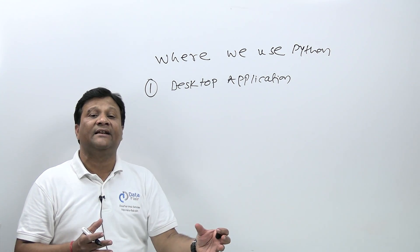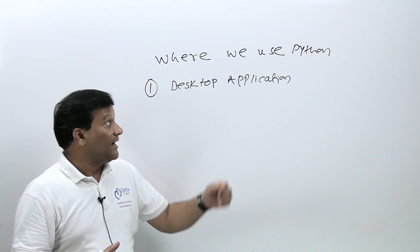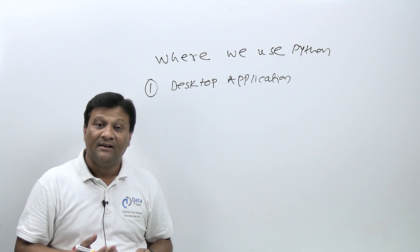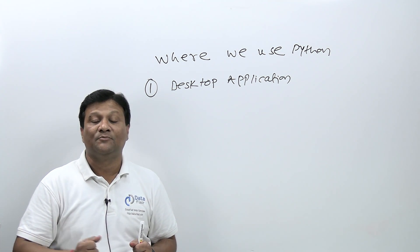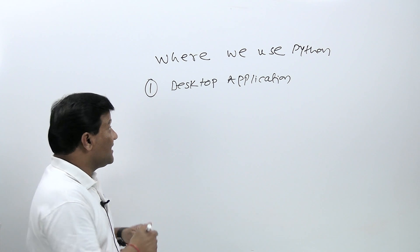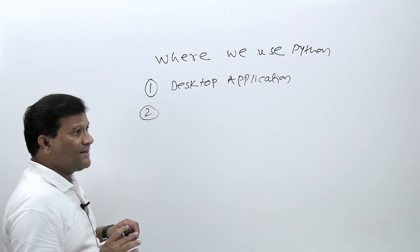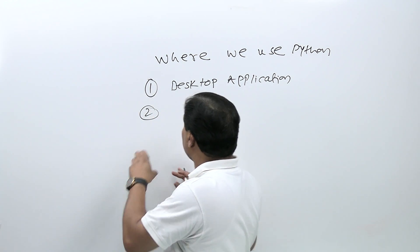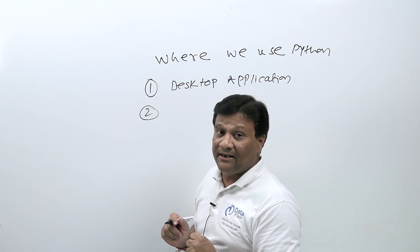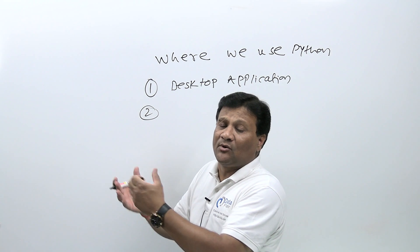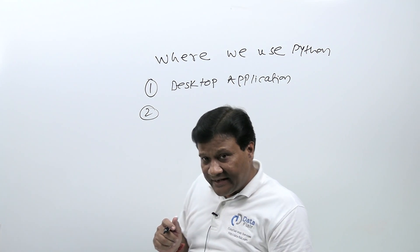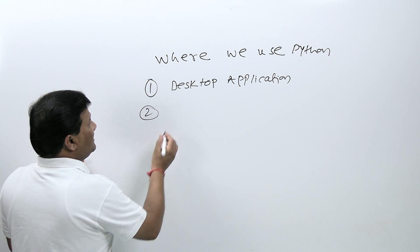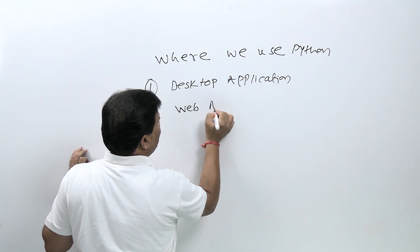Previously, desktop applications were developed in Visual Basic, which is a specific language only for that type of application. But nowadays Python is one of the most important languages to develop application software — if I need to design a desktop application I can use Python for that. The second area where Python is widely used is web development and web application.